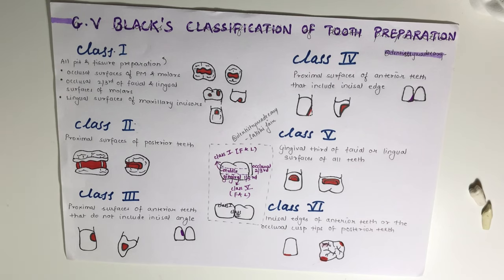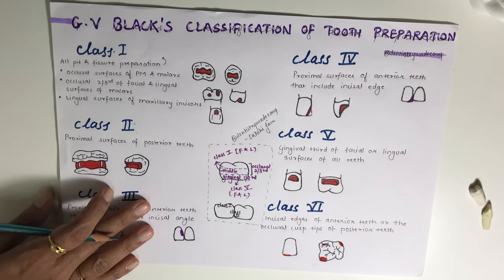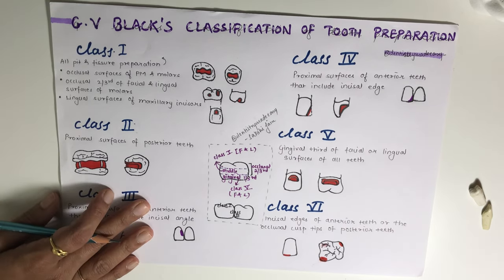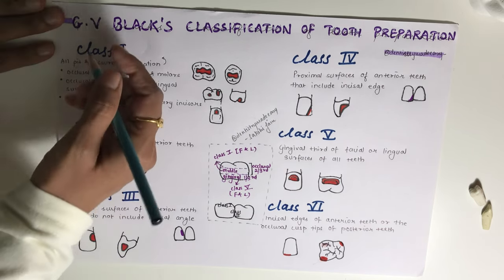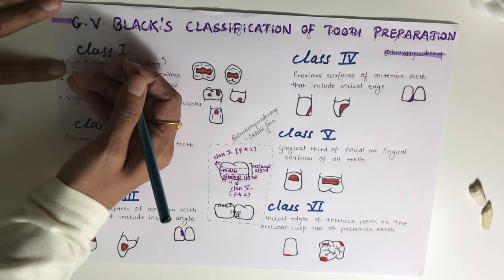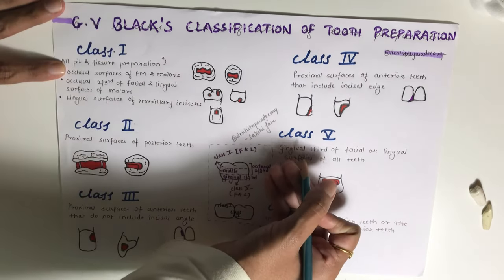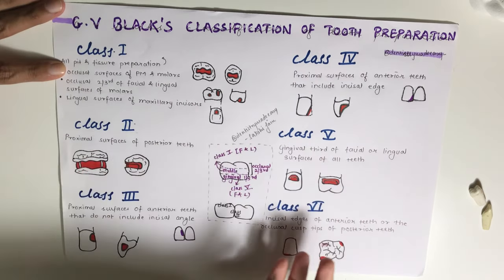Hello everyone, welcome back. The topic for today is GV Black's classification of tooth preparation. This is the most commonly used classification for tooth preparations, and it is a very commonly asked question in your viva and also in your theory examination. This classification comprises five classes, and later class six was added.